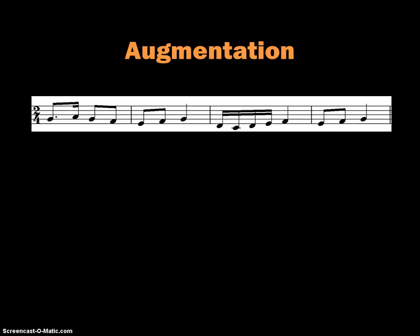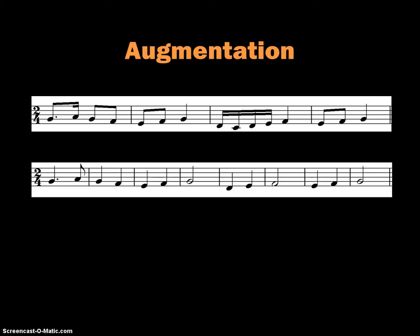Here's an example of London Bridge, kind of a variation of London Bridge. Again, we're in 2-4 time with eighth notes, quarter notes, and some sixteenth notes. If we were to double those values, the dotted eighth note now becomes a dotted quarter note. The sixteenth notes become eighth notes.